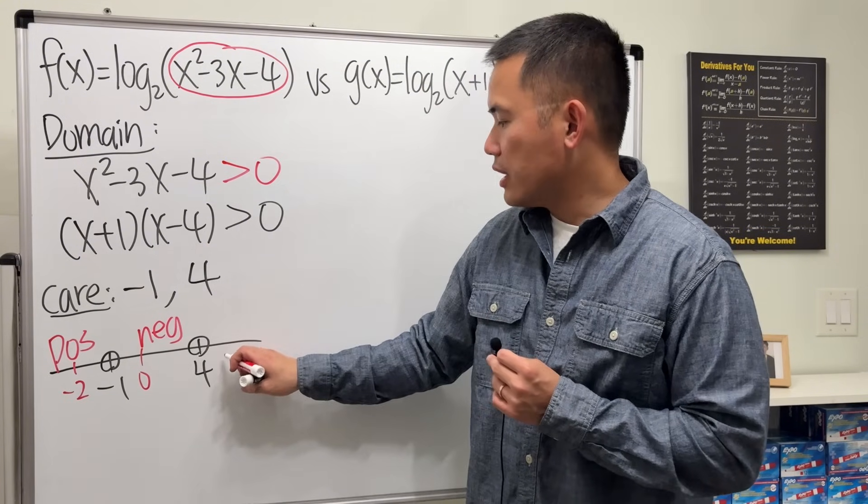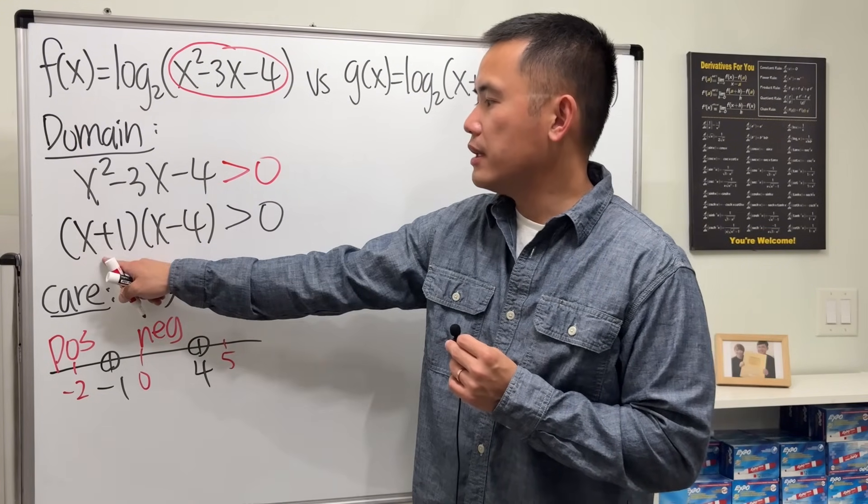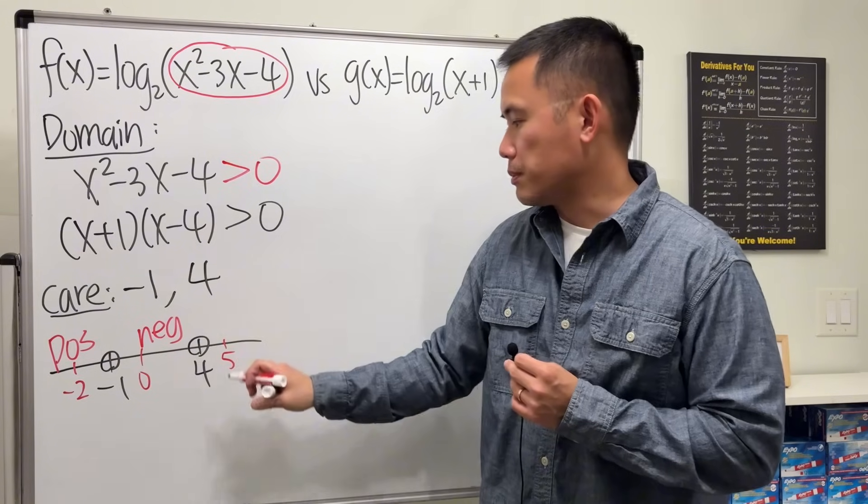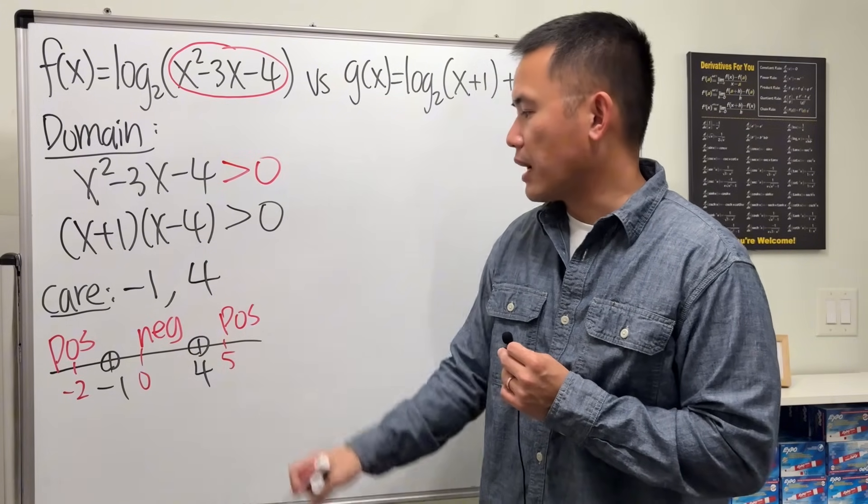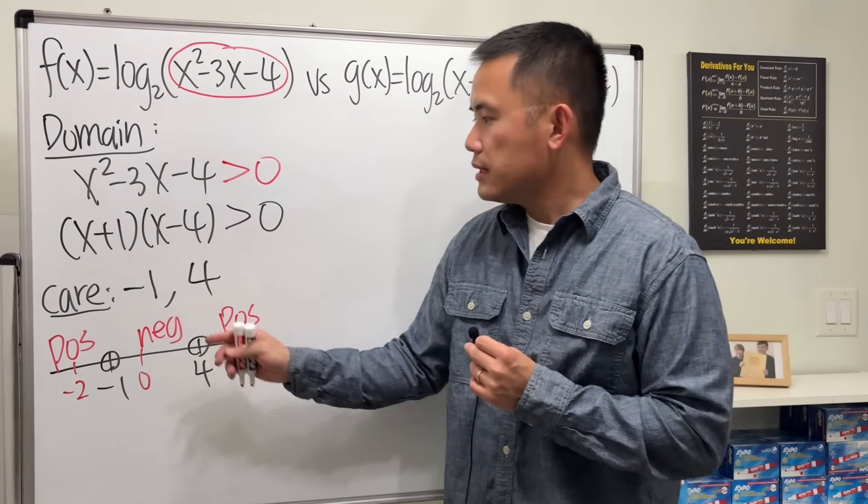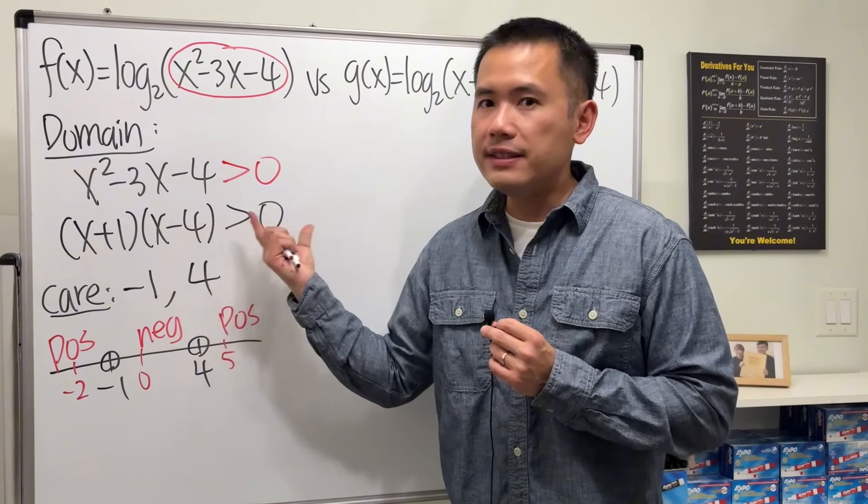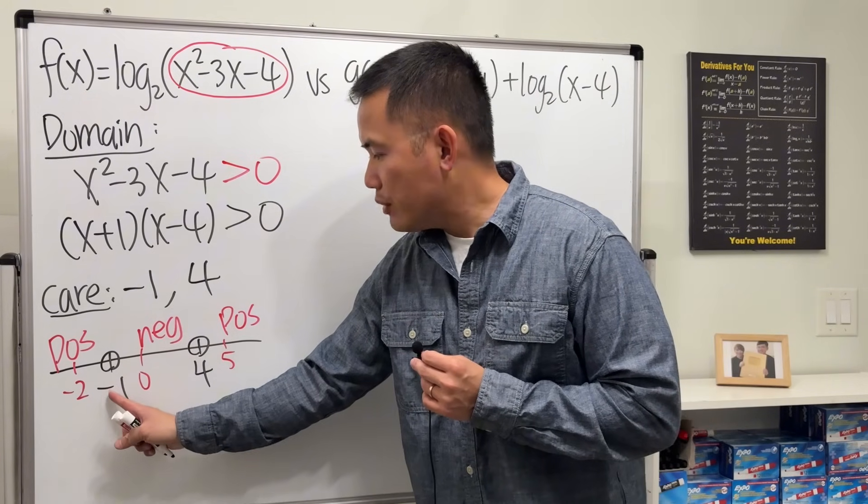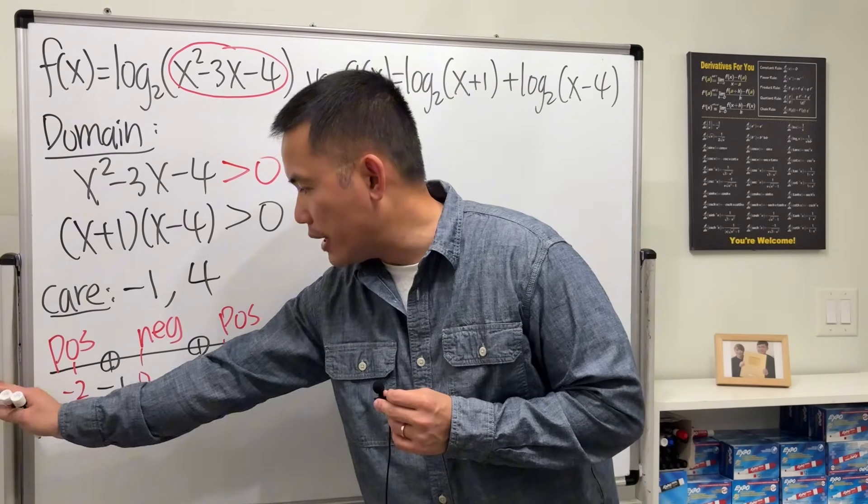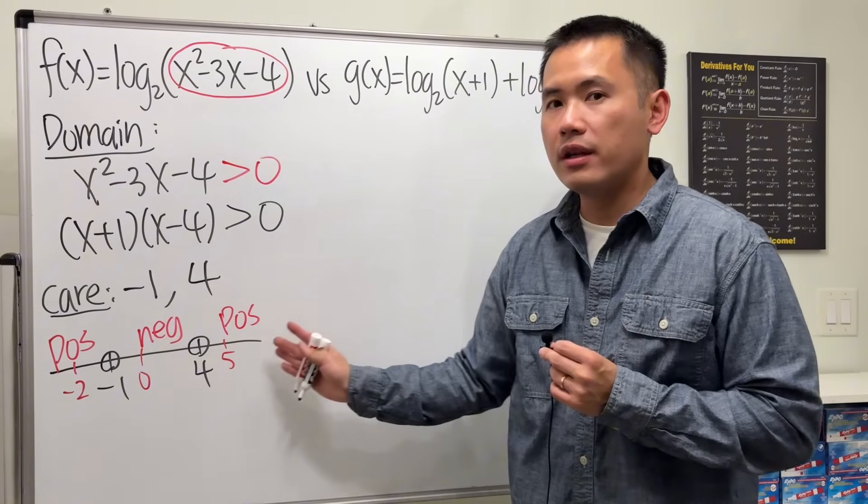Then pick a number bigger than 4, let's say 5. Put it here is positive and put it here the result is positive, so altogether is positive. So as you can see, in order to satisfy this inequality we have to have x is less than negative 1 or x is greater than 4.